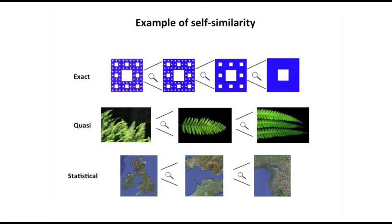Benoit Mandelbrot himself initially described in a Science paper about 50 years ago, looking at the coastline of Great Britain, that you can actually predict the dimensionality using fractal analysis. What's interesting to know is that dimensionality is no longer in integer numbers — it's not 1, 2, and 3 — but can be non-integer numbers such as 1.2 or 1.4.